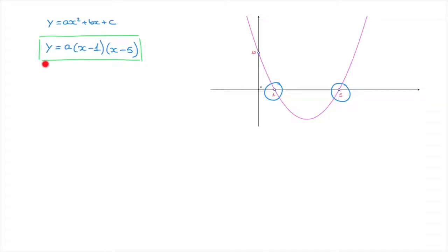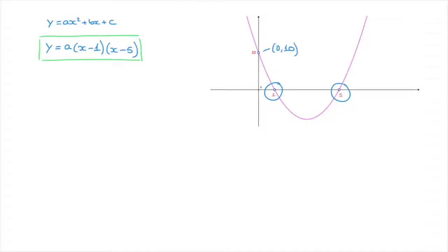Looking at this equation, we can see that the only unknown is the coefficient a — the same a as in the standard form equation. To find the value of a, all we need are the coordinates of one other point through which the parabola passes. Looking back at the parabola we were given, we can see that we know the y-intercept. This parabola cuts the y-axis when y equals 10, so the coordinates of that point are (0, 10). The x-coordinate of any y-intercept will always equal 0, since we're on the y-axis.